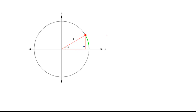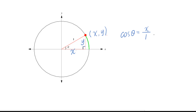Let's look at the unit circle. We know that any point on the unit circle we can label as (x, y) as a coordinate. According to SOHCAHTOA, cosine theta equals x over 1 because the radius for a unit circle is 1. So we can write cosine theta equals x, or x equals cosine theta.